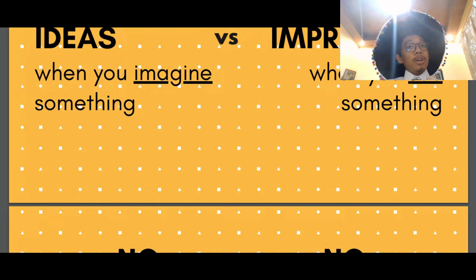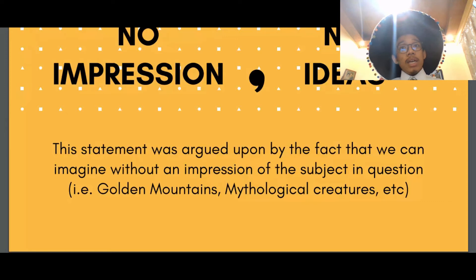Hume also said that without having an impression, you cannot have an idea. It is argued upon by the fact that we can imagine without an impression of the subject in question. A good example of this would be a golden mountain or mythological creatures like centaurs and similar creatures. So in response to such arguments,